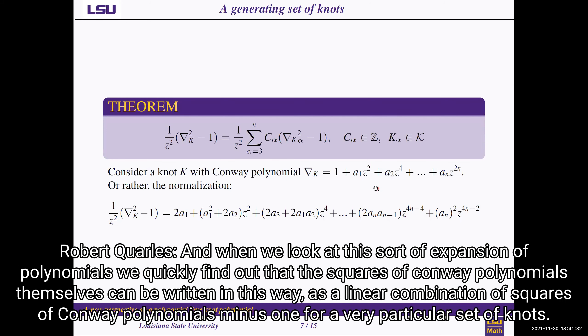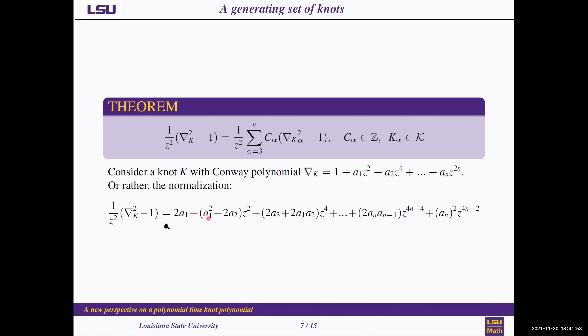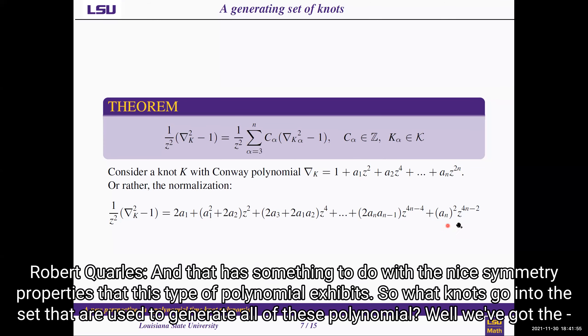And when we look at this sort of expansion of polynomials, we quickly find out that the squares of Conway polynomials themselves can be written in this way as a linear combination of squares of Conway polynomials minus one for a very particular set of knots. And that has something to do with the nice symmetry properties that this type of polynomial exhibits.